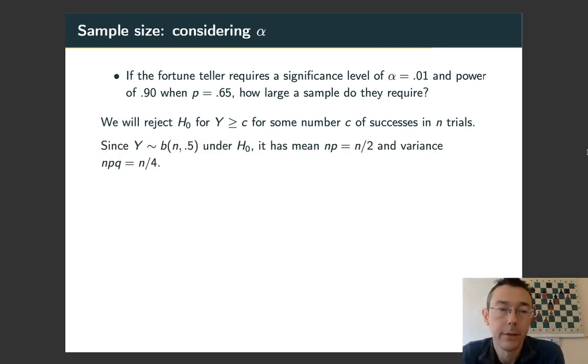To write down any probability statement, we need to know about the distribution of Y. It's going to depend on n, the number of trials. It's still going to be binomial. We have n trials and a 0.5 probability of success under the null hypothesis. We can compute mean and variance. Mean is np, so 0.5n. Variance is npq, so 0.25n. Remember, when we're talking about alpha, we're assuming the null hypothesis is true.